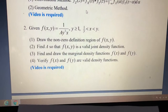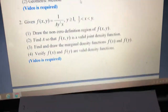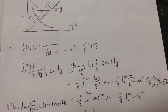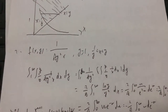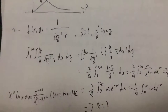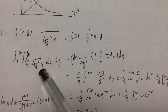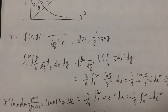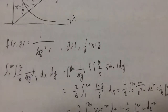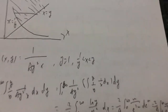For the second question, we need to find a so that f is a valid joint density function. So we have f equals 1 over a y squared x, where y is bigger than 1 and x smaller than y and bigger than 1 over y. We integrate f equals 1 over a y squared x by dx dy. That gives 1 over a y squared, and we set h equals 1 over x.